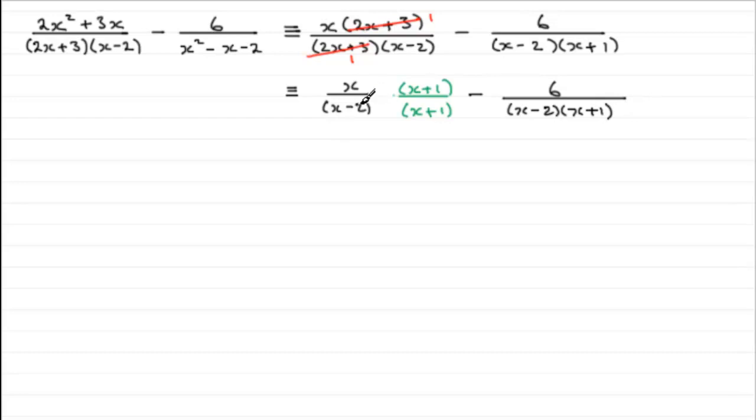Okay, now we can see that they both share exactly the same common denominator of x minus 2, x plus 1. So we can put that all over that denominator now. Let's just put it underneath here, x minus 2, x plus 1.